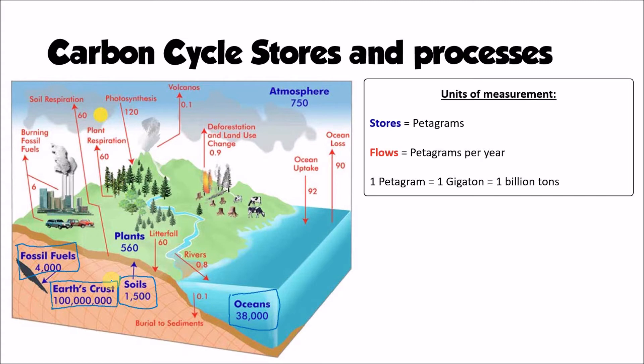The atmosphere is the next largest store that takes up 750 petagrams of carbon, and it's probably the most commonly spoken about store when we think about changes that are happening within the carbon cycle. We're all aware of how the composition of our atmosphere and the amount of carbon dioxide within the atmosphere is changing and the impacts that it has.